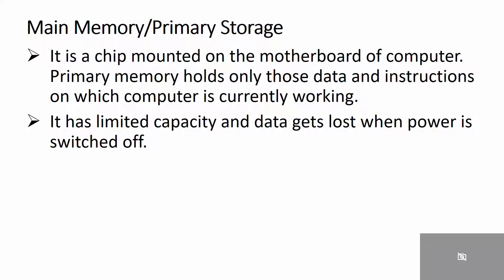Characteristics of primary memory: these are semiconductor memory. Usually this is volatile memory. Why? Because the main memory are RAM and ROM. ROM is non-volatile and RAM is volatile. That is why it's usually volatile memory, meaning data is lost in case the power is switched off.